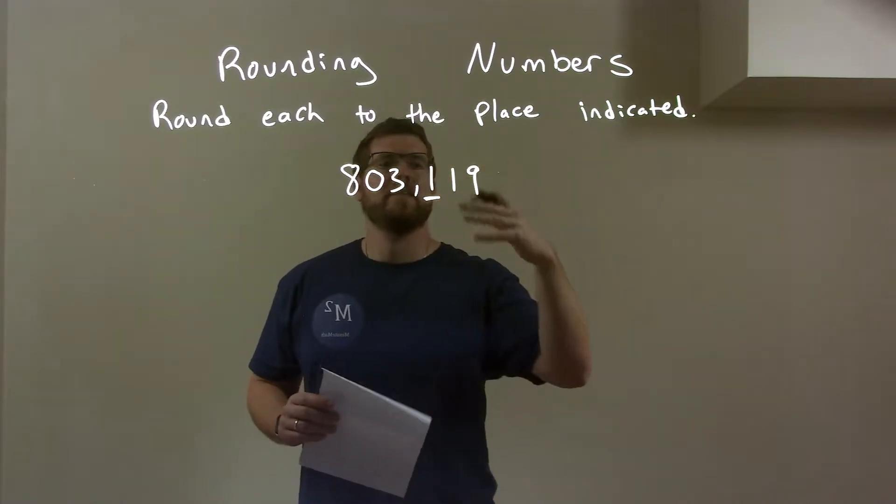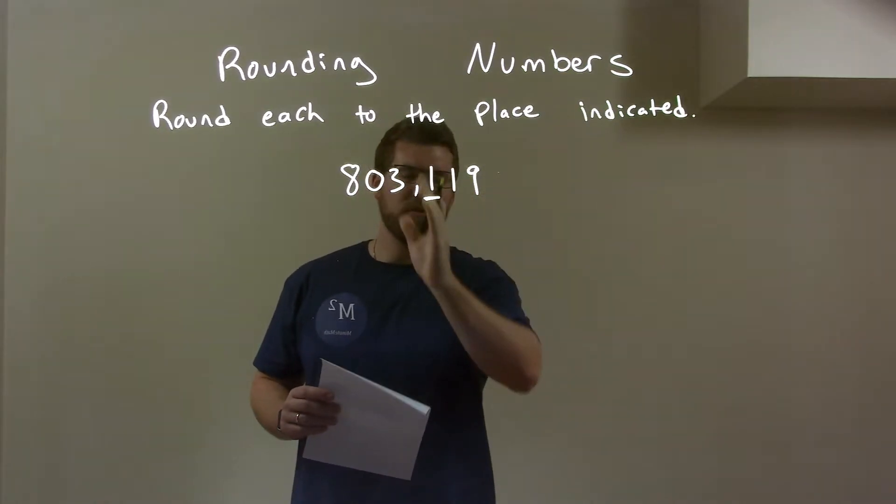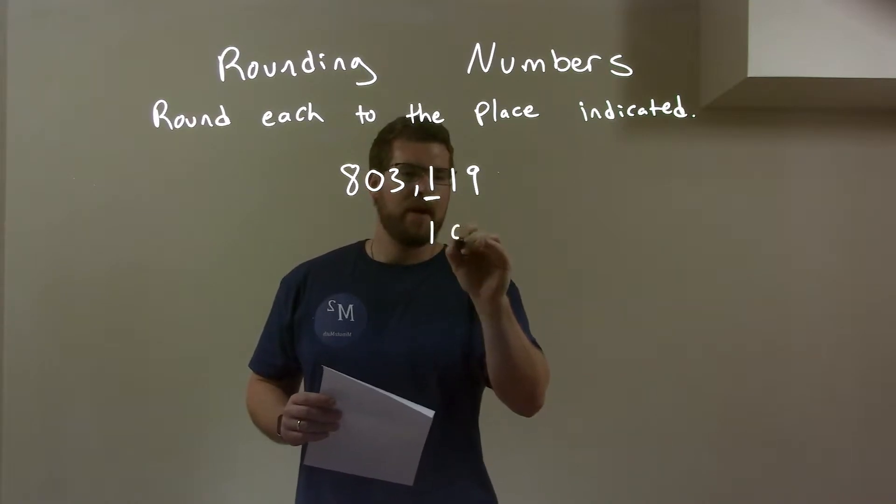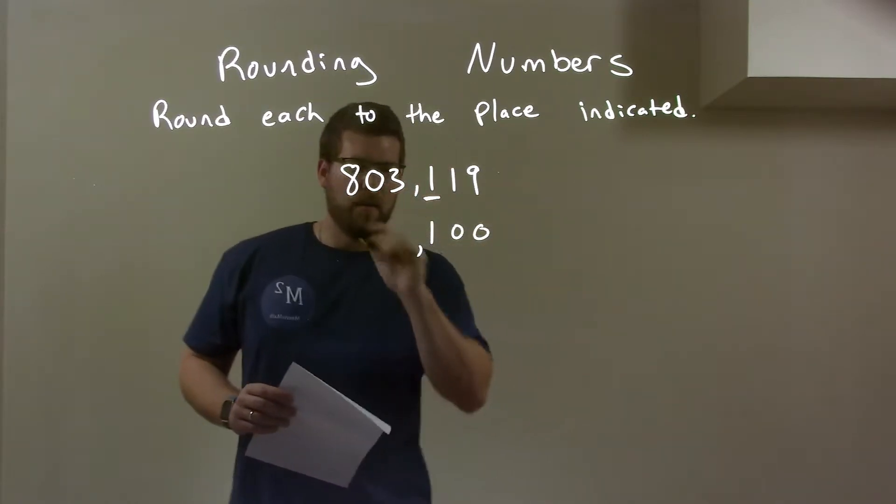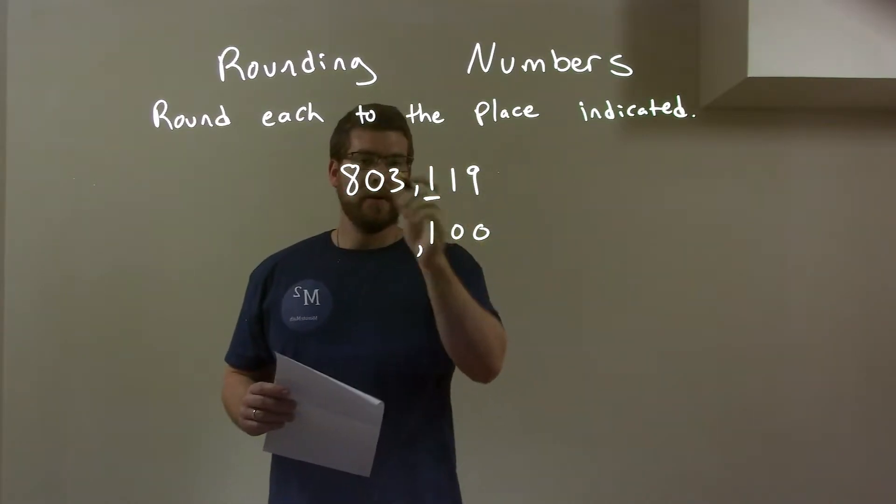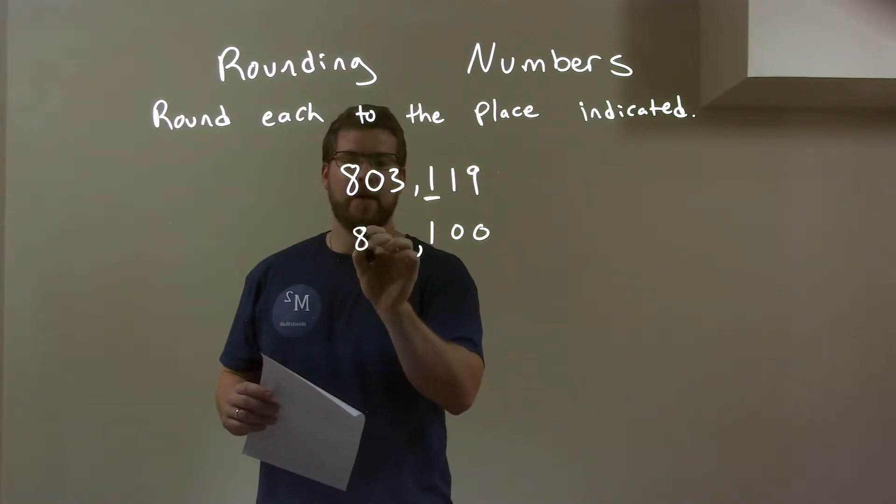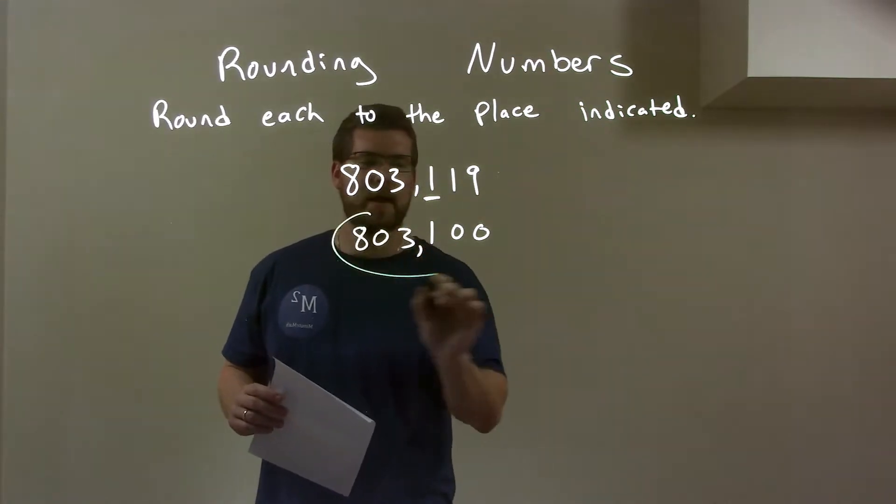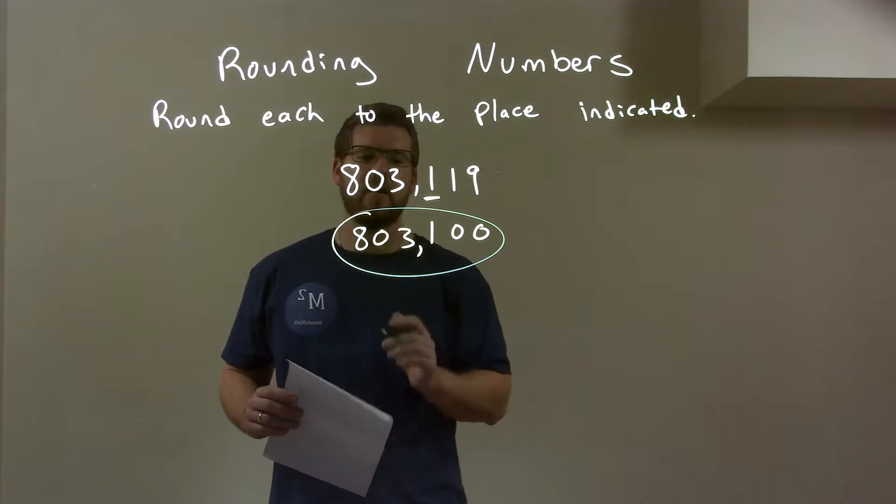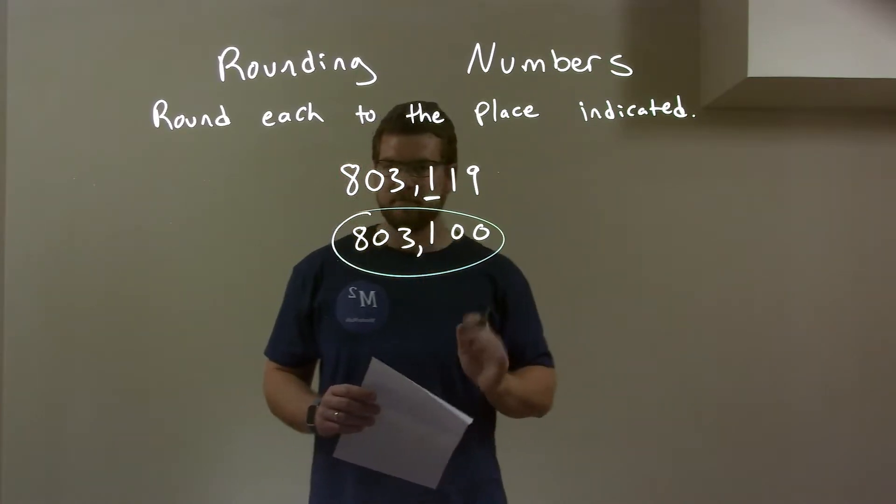Since the right is just a 1, we're essentially rounding down or keeping this first one the same. So 1 and the rest is just 0. Since we rounded this down, nothing changes over here. So we bring down the 8, 0, 3. And there we have our answer, 803,100.